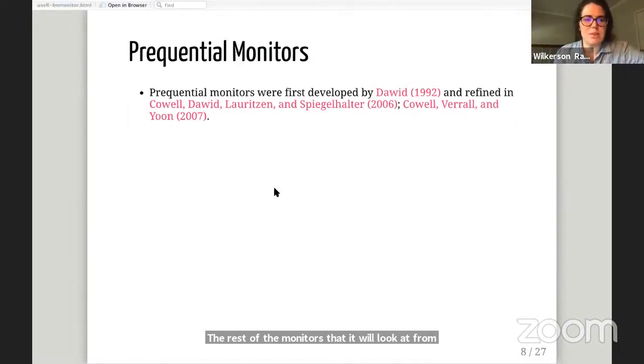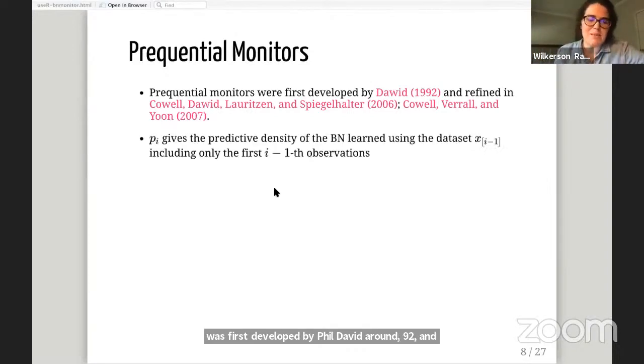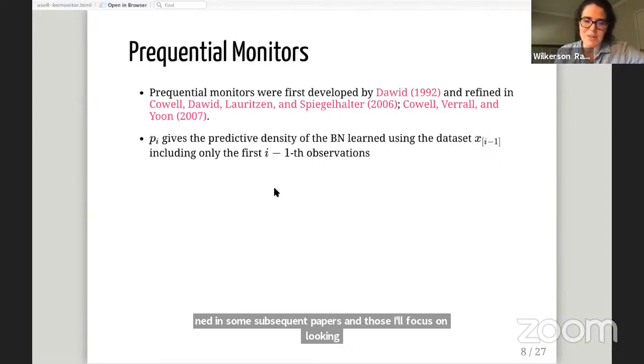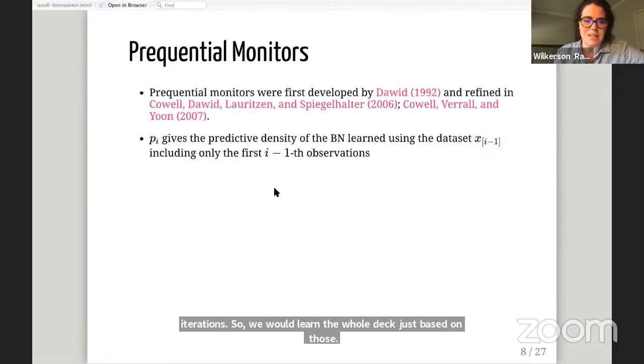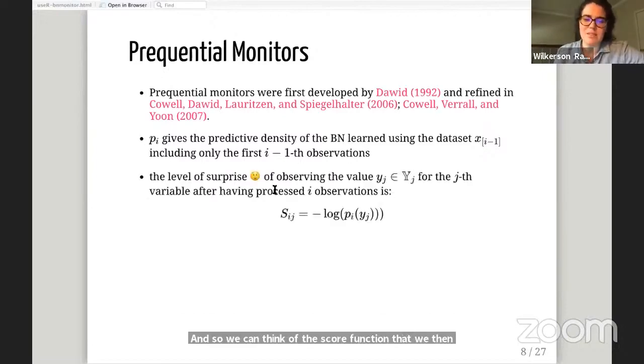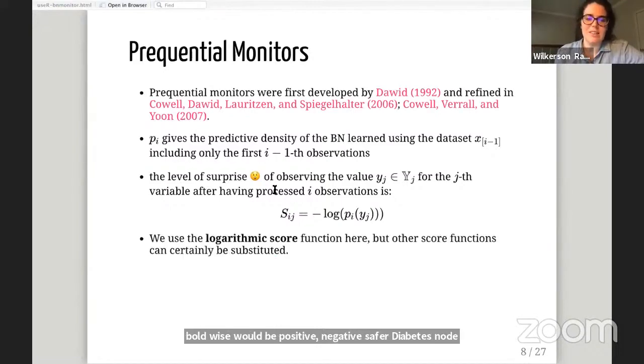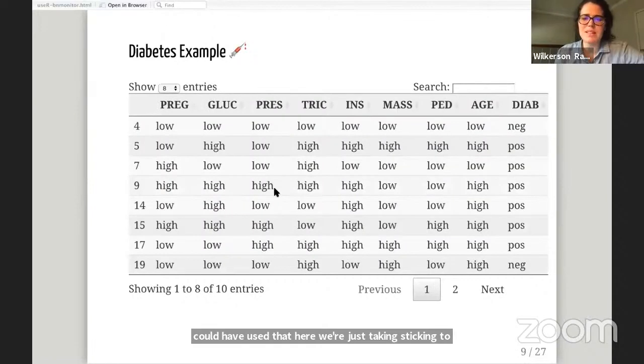The rest of the monitors are derived from the prequential framework, which was first developed by Philip Dawid around 1992. Those all focus on looking at the quantity pi, the predictive density from the Bayes net that you learned from all the previous i-1 iterations. We can think of the score function as the level of surprise of seeing the next observation. Here we're looking at the logarithmic score function. When we look at our diabetes example, when we think about predicting the next iteration, we might learn on the first nine observations and try to predict the tenth.